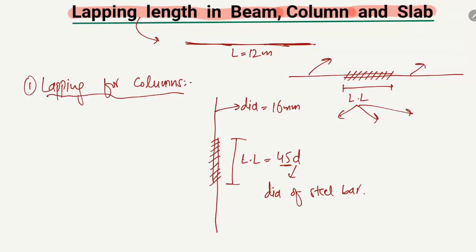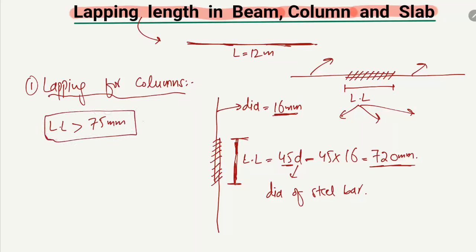to find the lapping length for the column, we multiply 45 by the diameter of 16 millimeters, which gives us 720 millimeters. So the lapping length for a column with a 16mm bar is 720 millimeters. It should be kept in mind that the lapping length should always be greater than 75 millimeters — it should never be less than 75 millimeters. In our case, the result of 720 millimeters satisfies this condition.